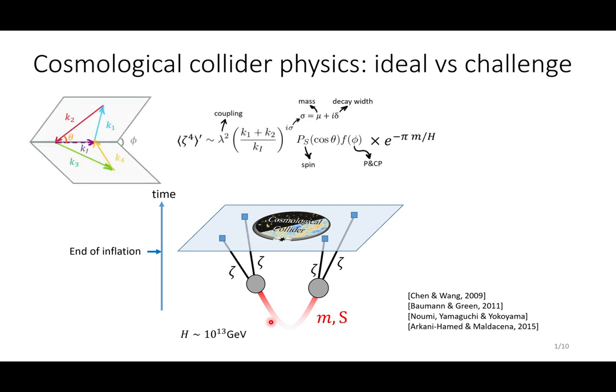For instance, if you take the four-point correlation functions and then vary the external momentum, you find that the four-point correlation function carries much information. There is an oscillation in the momentum ratios, whose frequency characterizes the mass of the intermediate particle, and the angular dependence carries the spin information of this particle, and lots of other information on coupling and parity, decay widths, and so on.